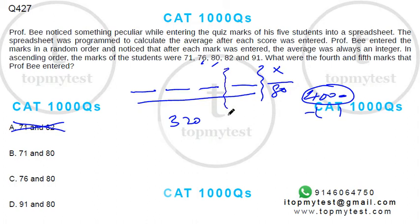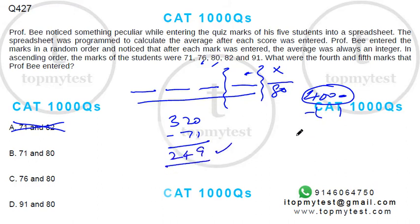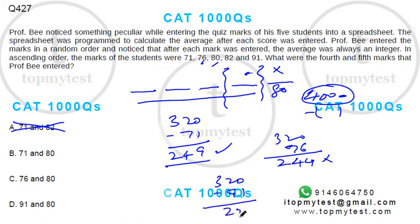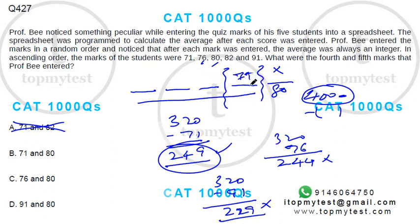Following the same logic, if I remove the fourth mark, whatever is left should be a multiple of three. If I subtract 71 from 320, that gives 249, which is a multiple of three. 320 minus 76 gives 244, which is not a multiple of three. And 320 minus 91 gives 229, which is also not a multiple of three. So the fourth mark is 71, and option B is the correct choice.